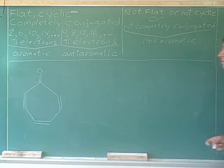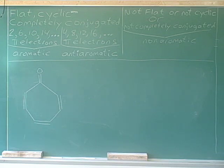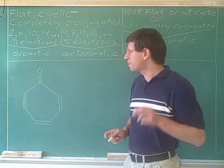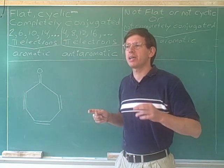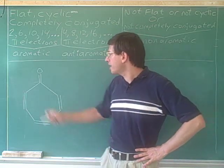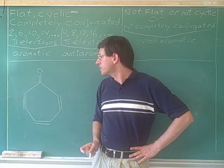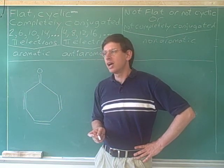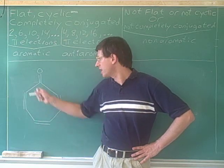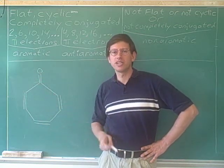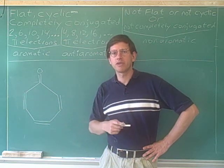We only count the pi electrons in the ring. If there are any pi electrons on substituents outside the ring, we don't count them when figuring out whether the molecule satisfies Hückel's rule. This next problem introduces a new difficulty. We said we should only count the pi electrons in the ring, but how should we treat the pi electrons in this pi bond with the oxygen? Should we treat these pi electrons as being in the ring or outside the ring? It's not really clear, because the pi bond is shared between the oxygen, which is outside the ring, and the carbon, which is inside the ring.